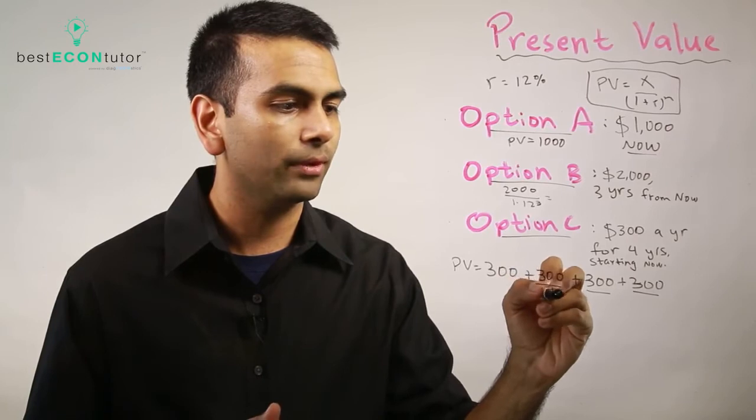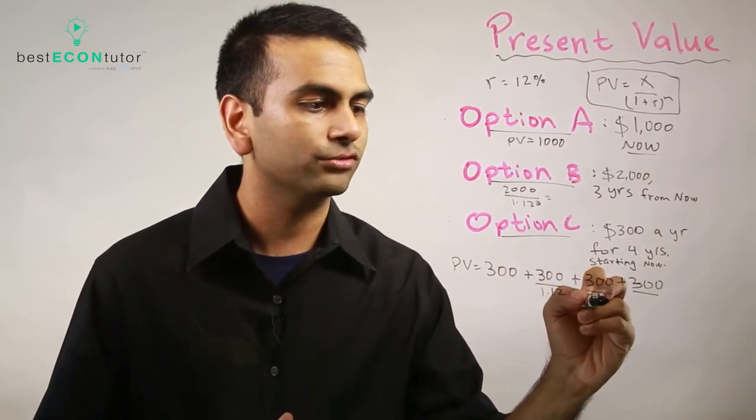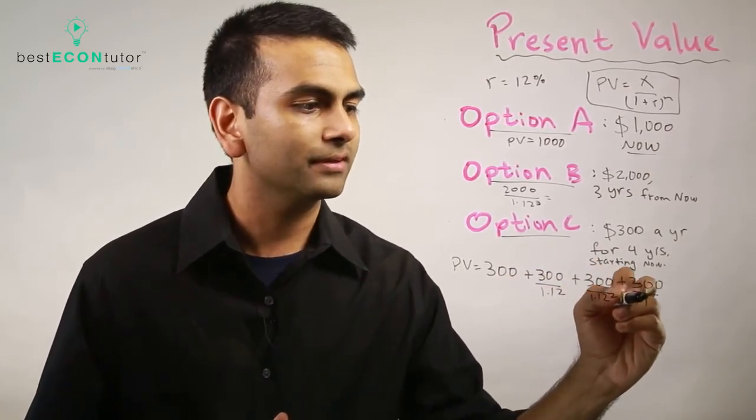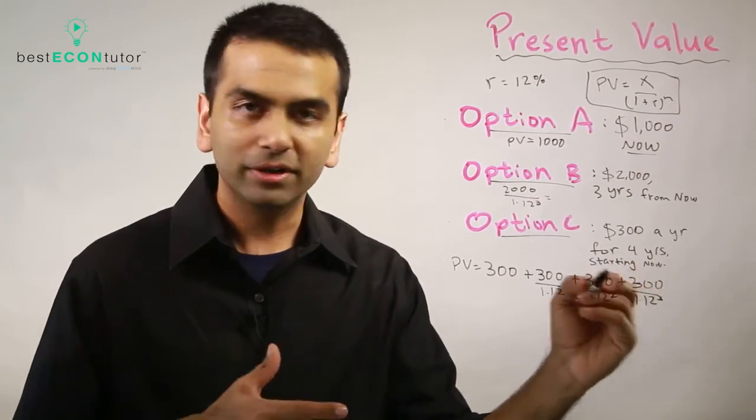This is given right now so its present value is 300. This is a year from now so it's divided by 1.12. That's two years from now so that's 1.12 squared. That's three years from now so that's 1.12 cubed. So notice the more into the future it is, the lower the present value.